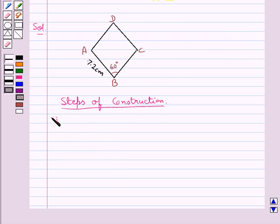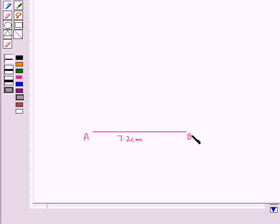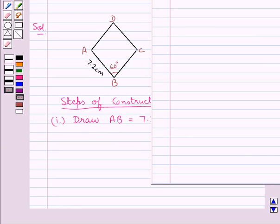So first we draw AB equal to 7.2 cm. This is AB of length 7.2 cm. Now since ABCD is a rhombus, so obviously ABCD is a parallelogram.